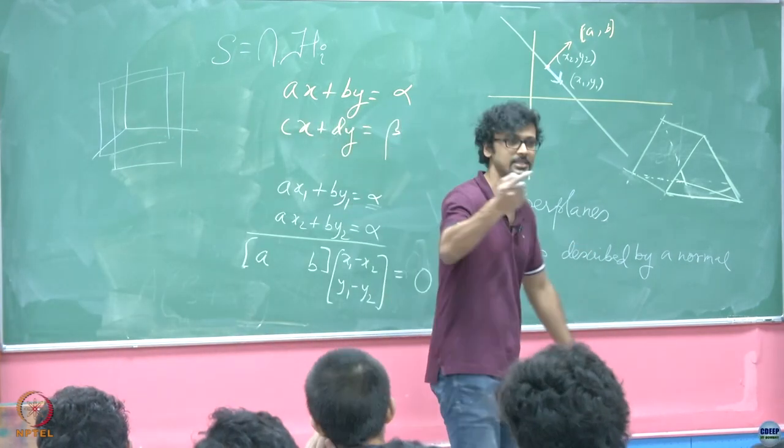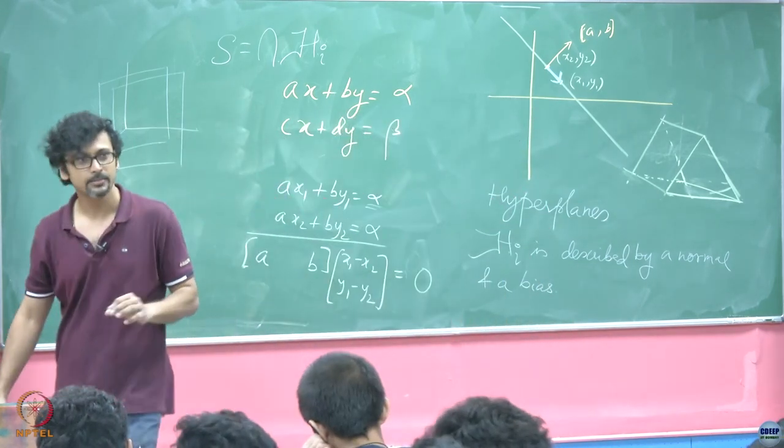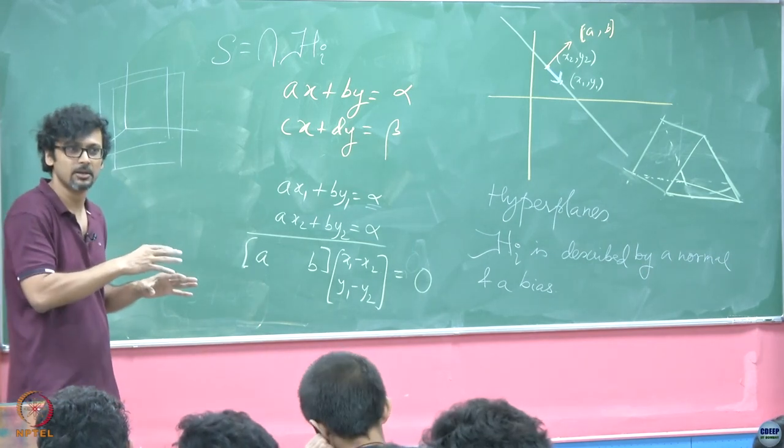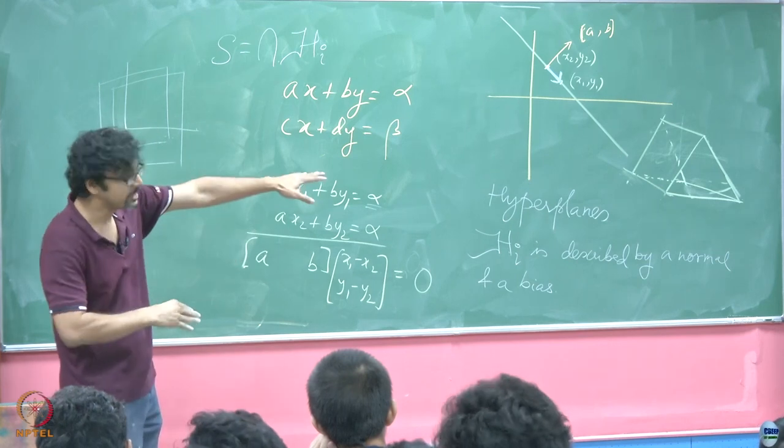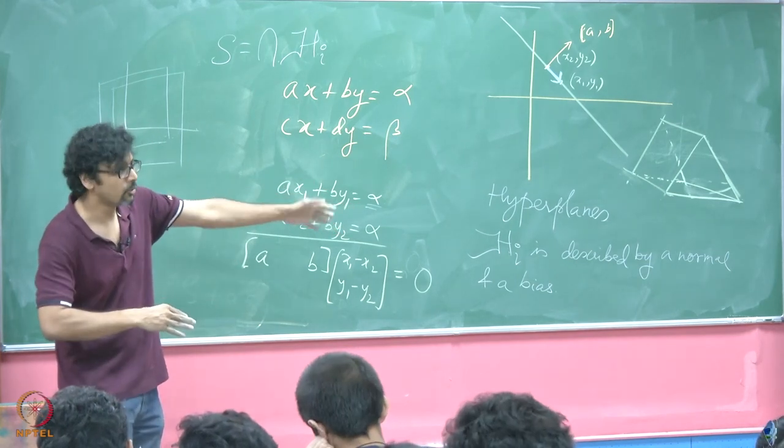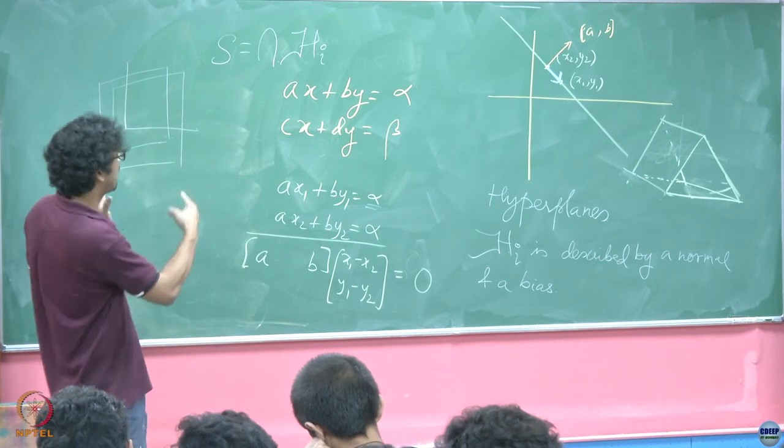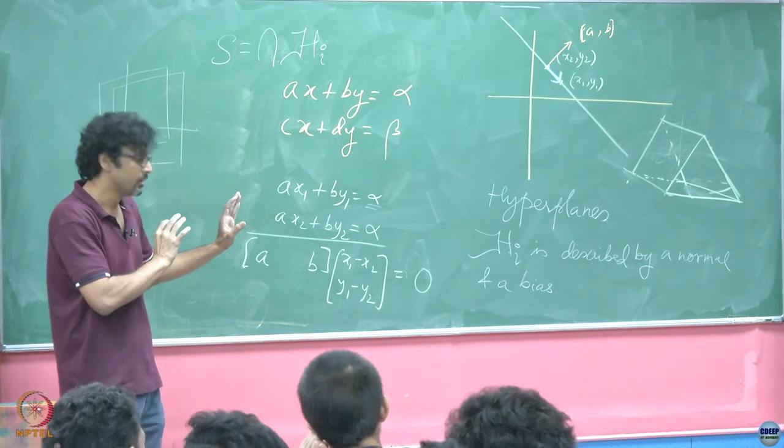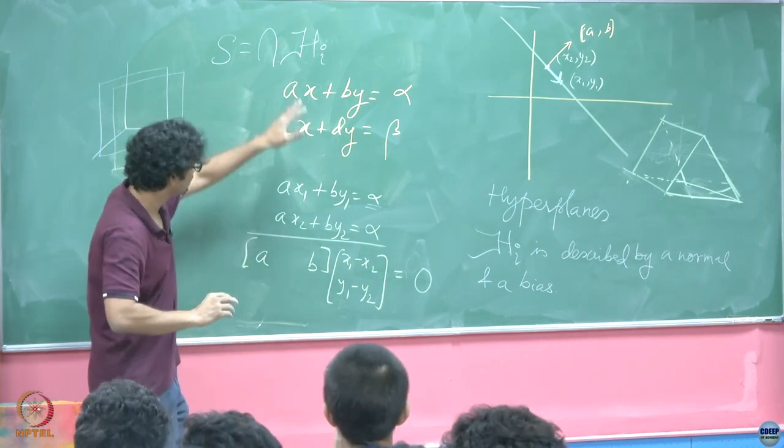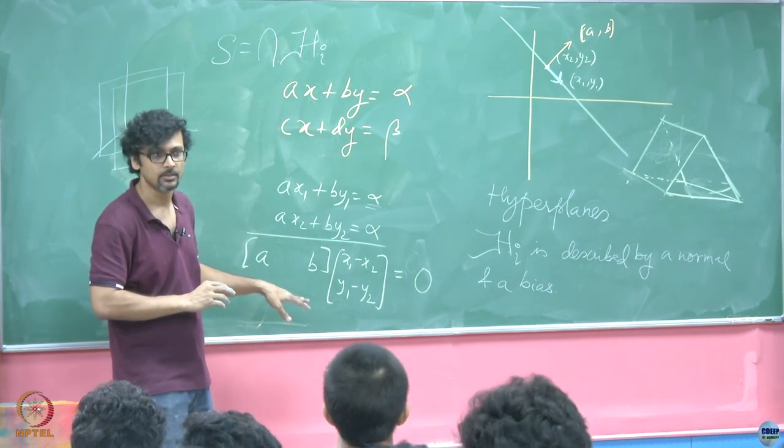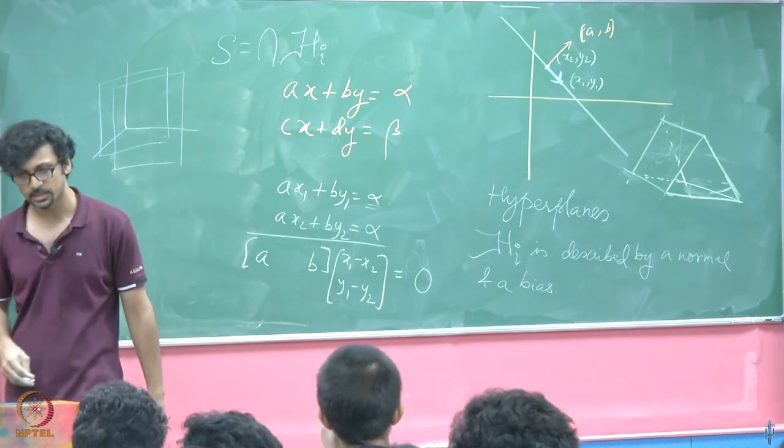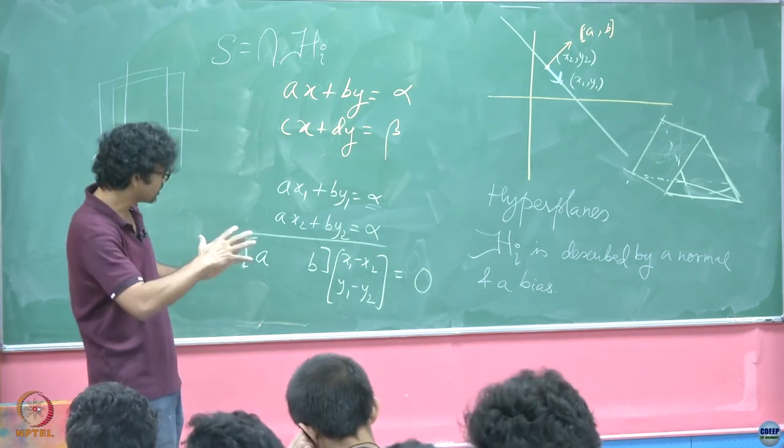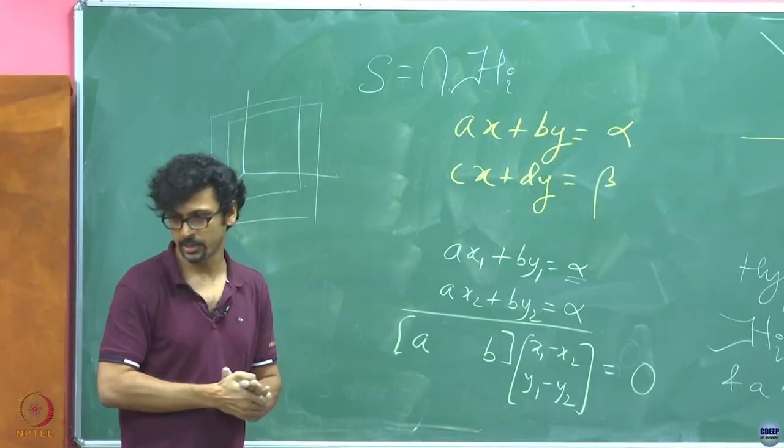So do not get too carried away with intuition that you build in lower dimensional spaces. Already in 3D this is messing up and 4D we cannot even visualize. So that is why we want an algebraic structure. Although it is good to have a geometric insight every once in a while, let us not be over reliant on that geometry but rather trust what we do algebraically.